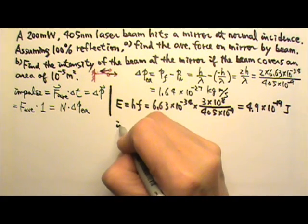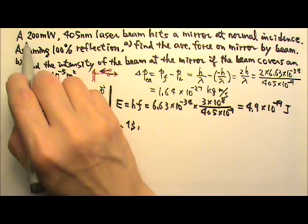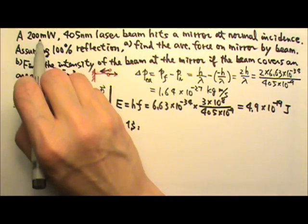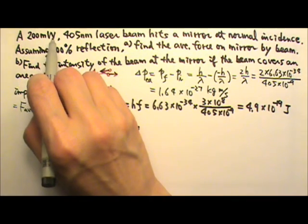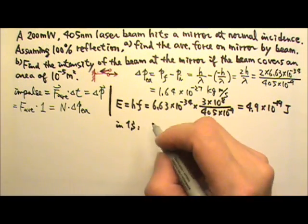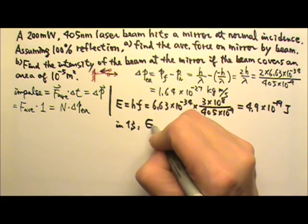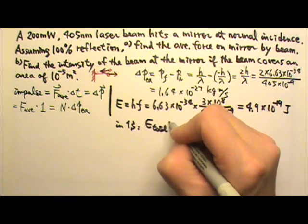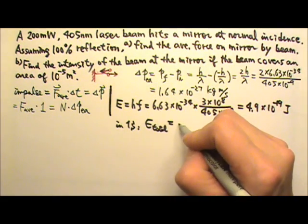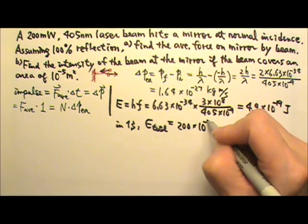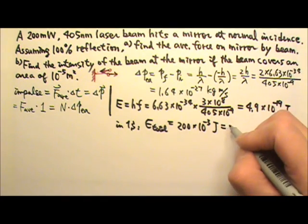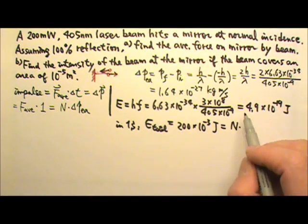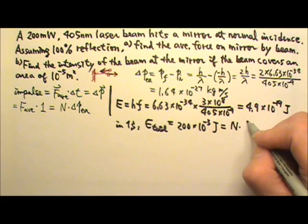Now in one second, the total energy will be 200 milliwatts, because 200 milliwatts means 200 millijoules per second. So in one second, the total energy from all the photons equals 200 times 10 to the negative 3rd joules, which equals N photons times the photon energy for each photon.